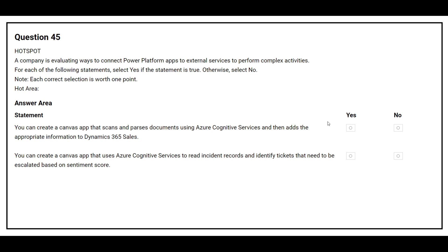Question 45: A company is evaluating ways to connect Power Platform apps to external services to perform complex activities. For each statement, select Yes if true, otherwise No. Statement 1: You can create a canvas app that scans and parses documents using Azure Cognitive Services and then add the appropriate information to Dynamics 365 Sales — correct answer: Yes. Statement 2: You can create a canvas app that uses Azure Cognitive Services to read incident records and identify tickets that need to be escalated based on a sentiment score — correct answer: Yes.